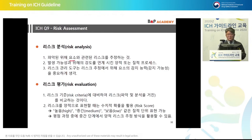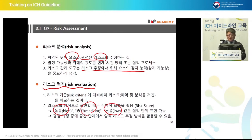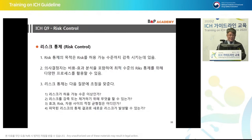The next step is risk analysis. Once we identify the risk, we estimate the risk associated with the identified hazard. Detectability is also important. Then comes risk evaluation — we can say the risk is high, moderate, or low using qualitative measures, or we can provide quantitative measures like percentage scores. We must be very clear about the risk and evaluate it thoroughly.